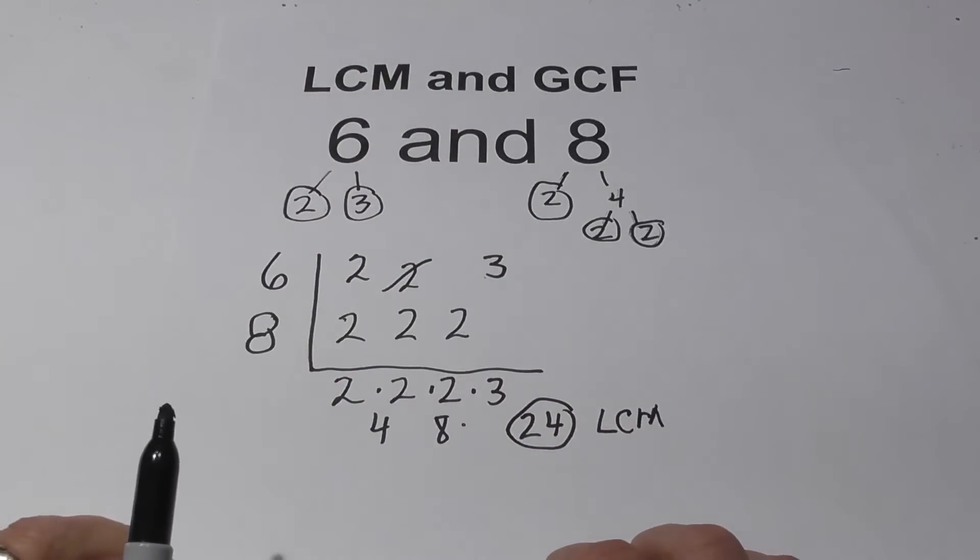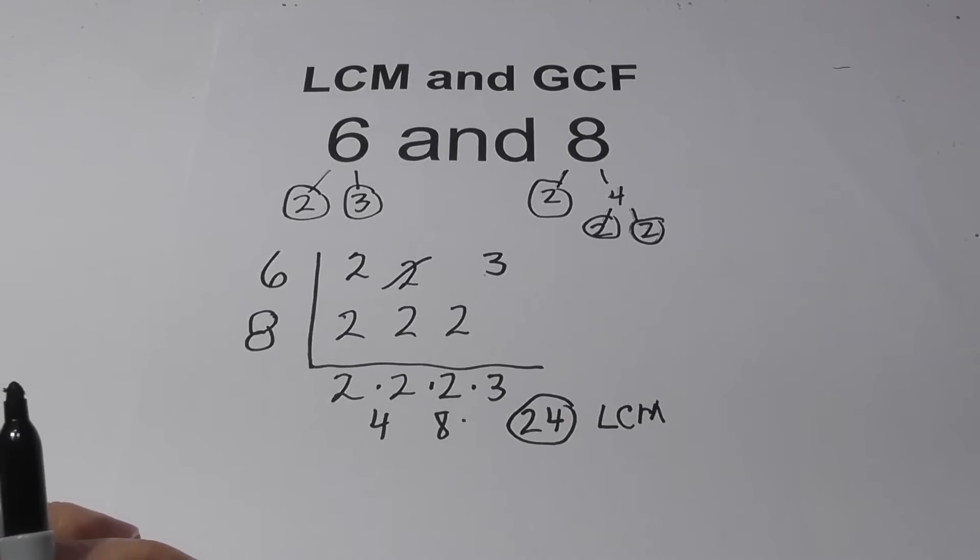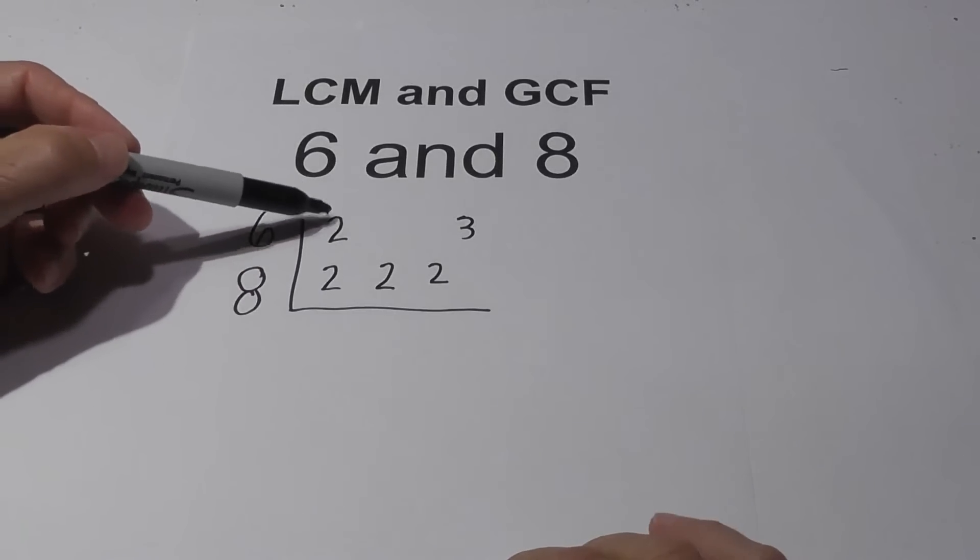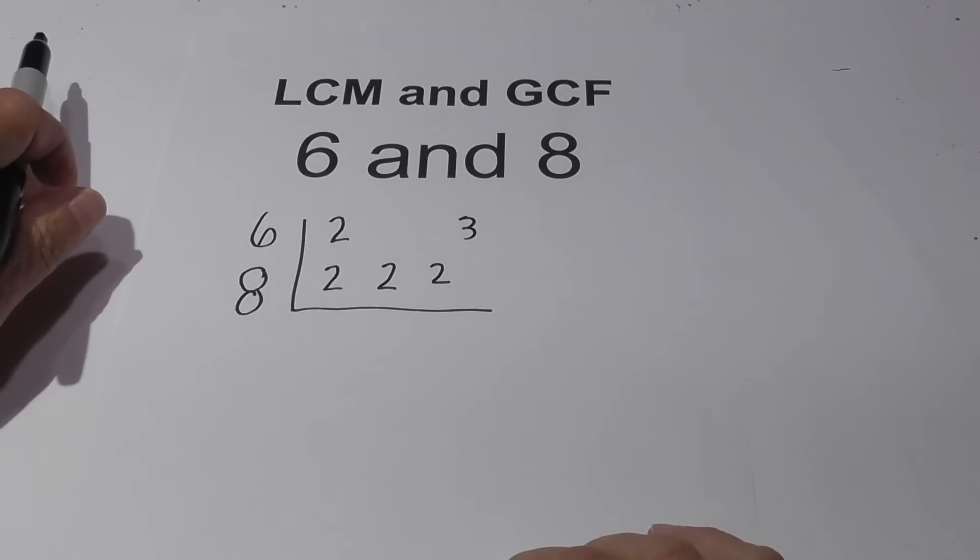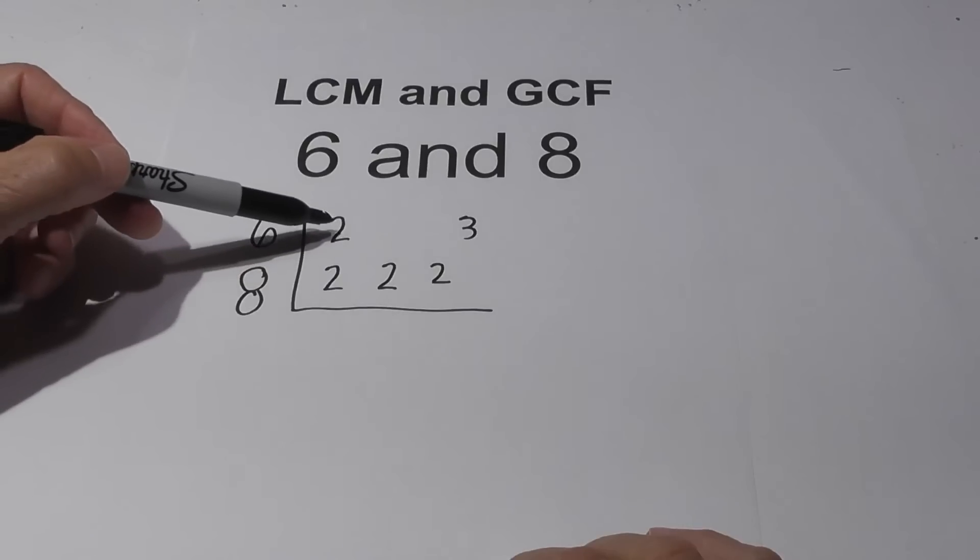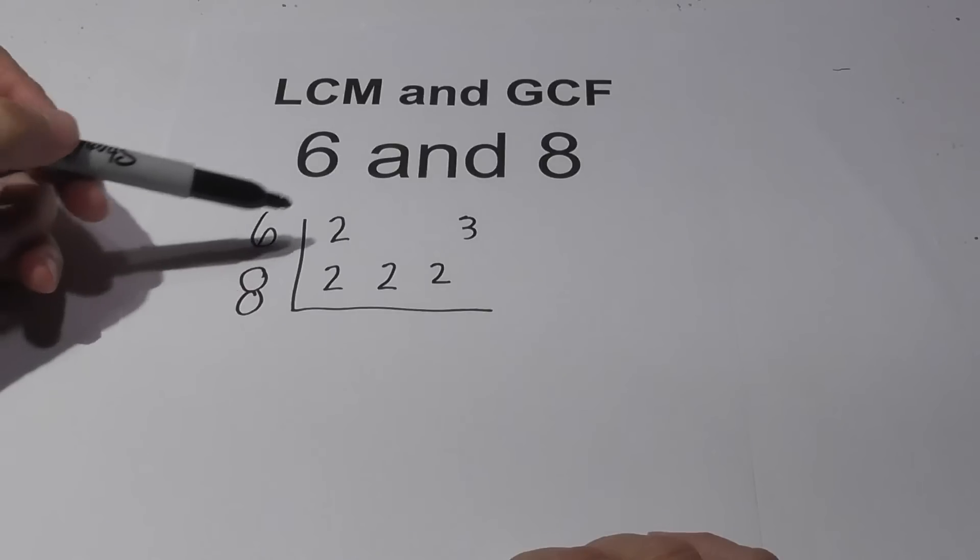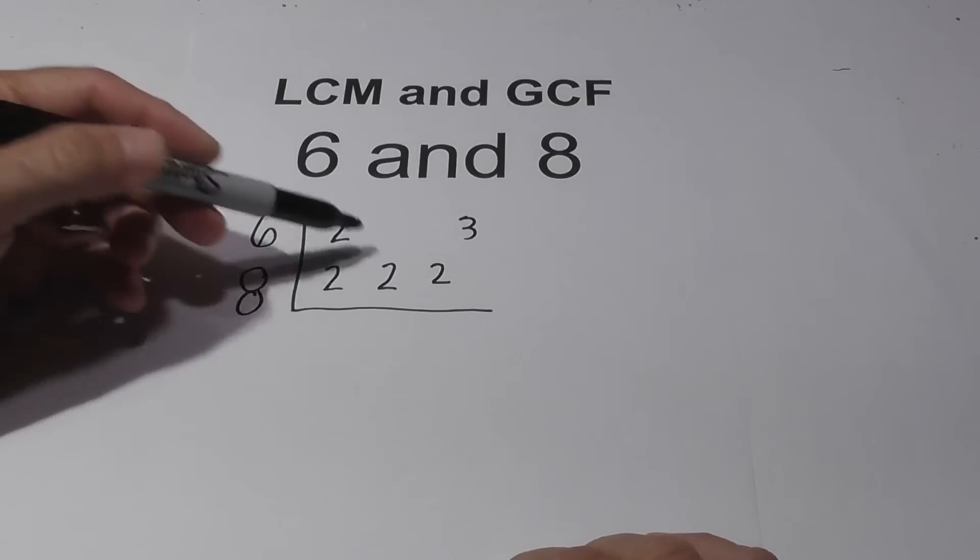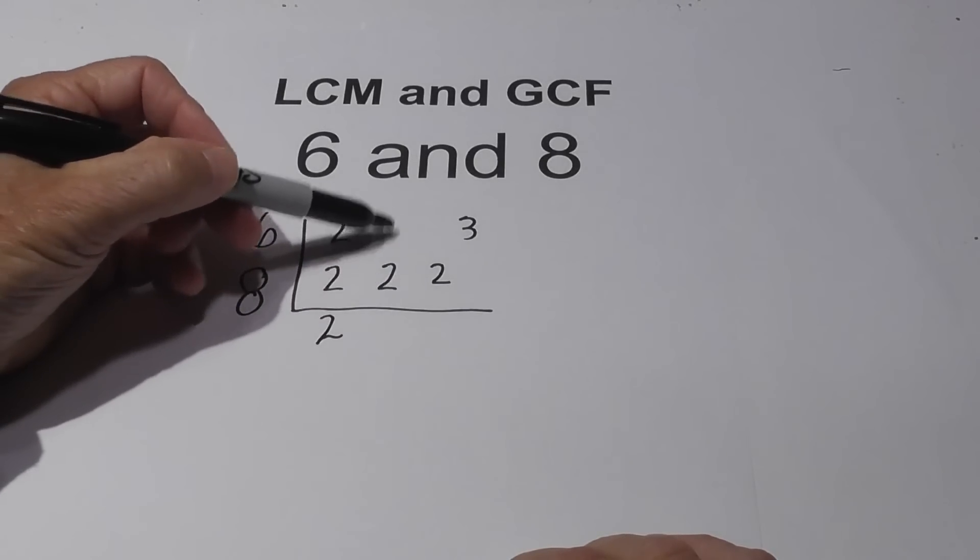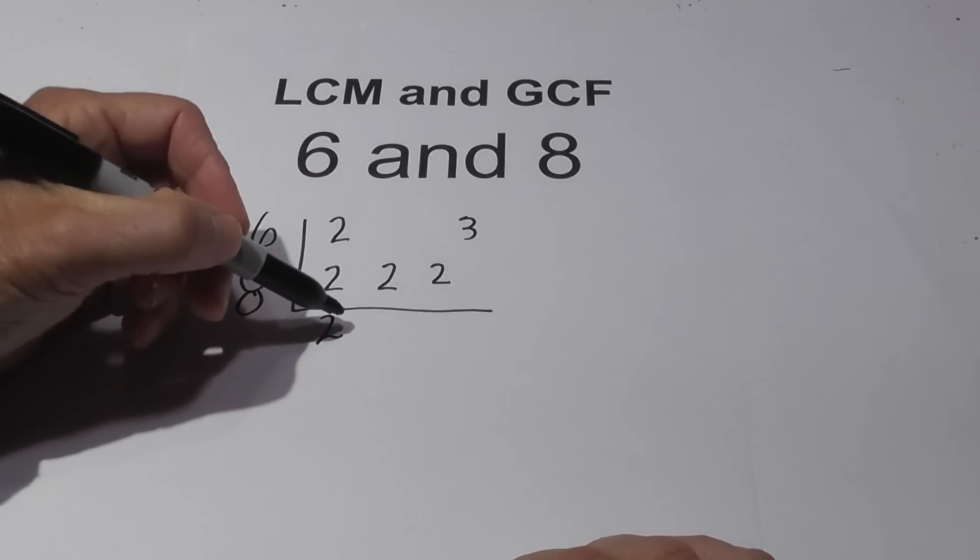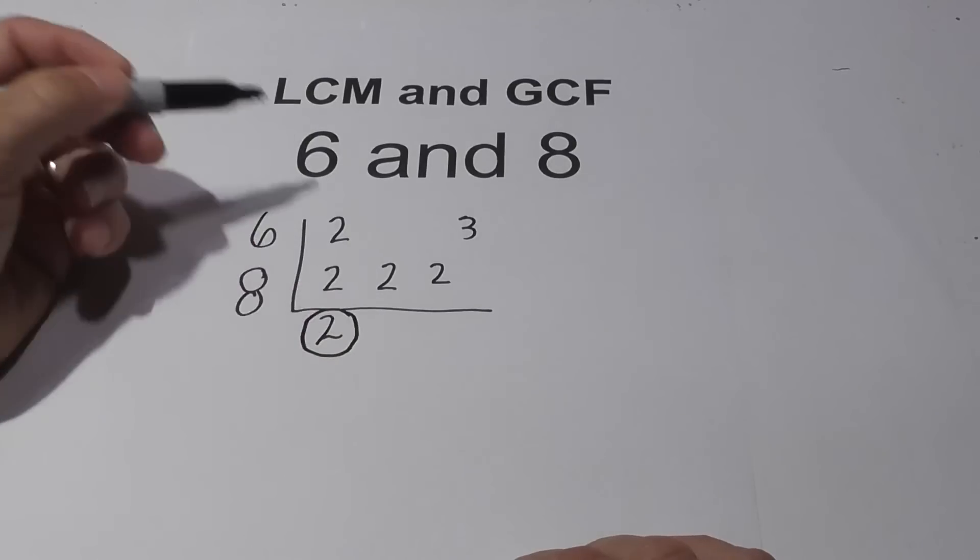Now for the GCF, let's work on that. If you notice, I've rewritten this chart and the rule for the GCF is this: You have to find a prime number that is found in both the 6 and the 8. And if I look here, I've got a 2. This is not found in both, not found in both, not found in both. And so the GCF is 2.